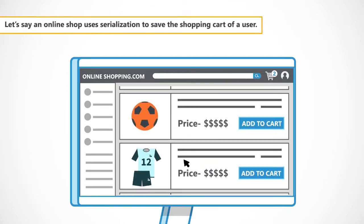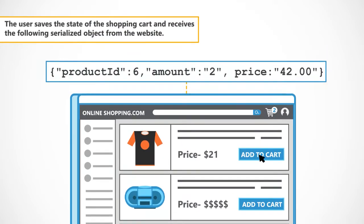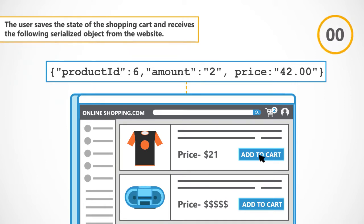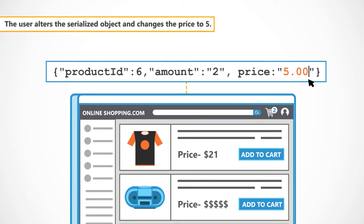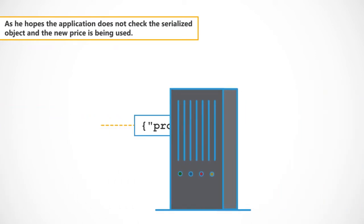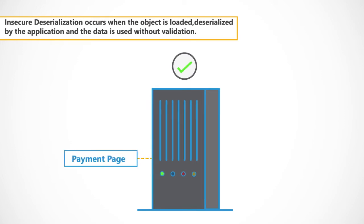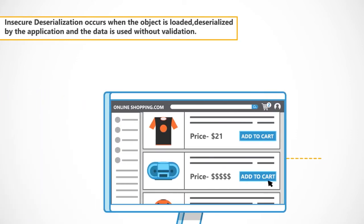Let's say an online shop uses serialisation to save the shopping cart of a user. The user saves the state of the shopping cart and receives the following serialised object from the website. The user alters the serialised object and changes the price to 5, hoping the application does not check it and the new price gets used. Insecure Deserialisation occurs when the object is loaded and deserialised by the application and the data is used without validation.